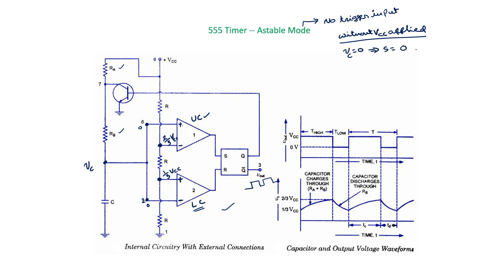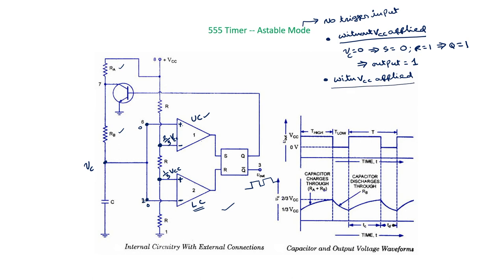For the lower comparator, the voltage at the inverting terminal is 0 and the non-inverting terminal has a positive value greater than 0, so R becomes 1. Because the reset input R is 1, this implies Q̄ = 1. That Q̄ itself acts as the output of the circuit, so the initial output of the astable multivibrator is 1.